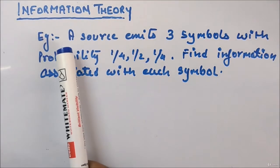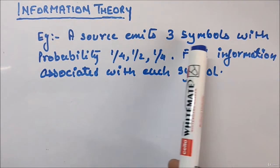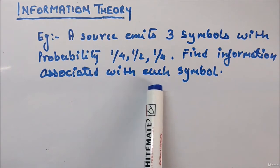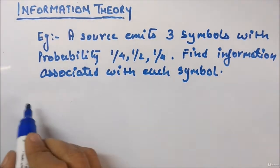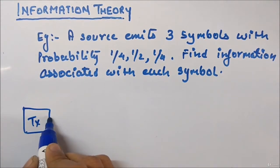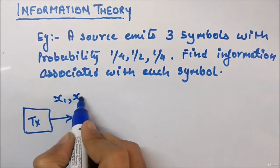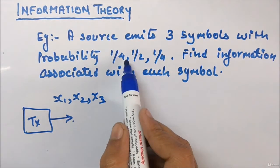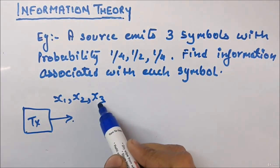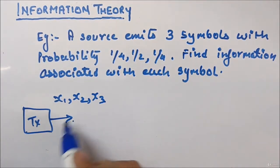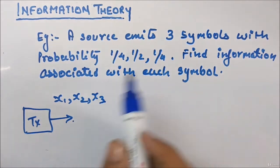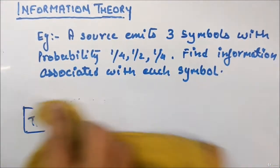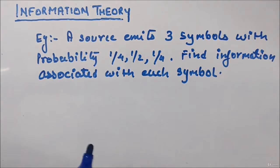For example: a source emits three symbols with probabilities 1/4, 1/2, and 1/4, and you have to find the information associated with each symbol. The transmitter is transmitting x1, x2, or x3 — these are the three symbols. The probability of x1 is 1/4, x2 is 1/2, and x3 is 1/4.